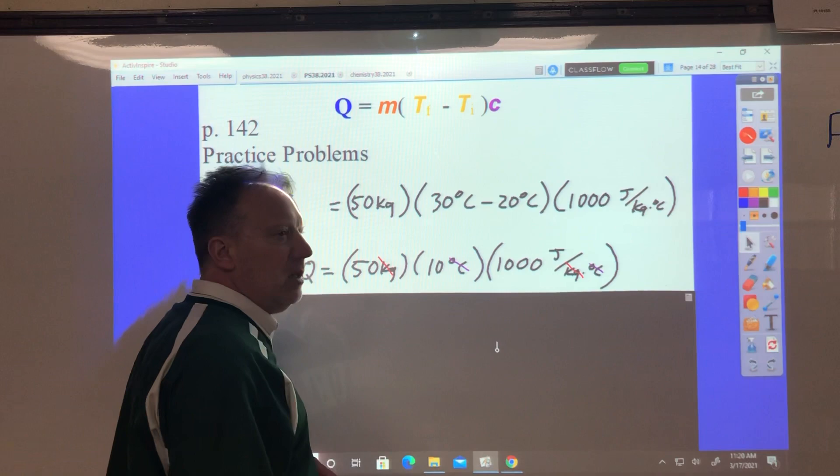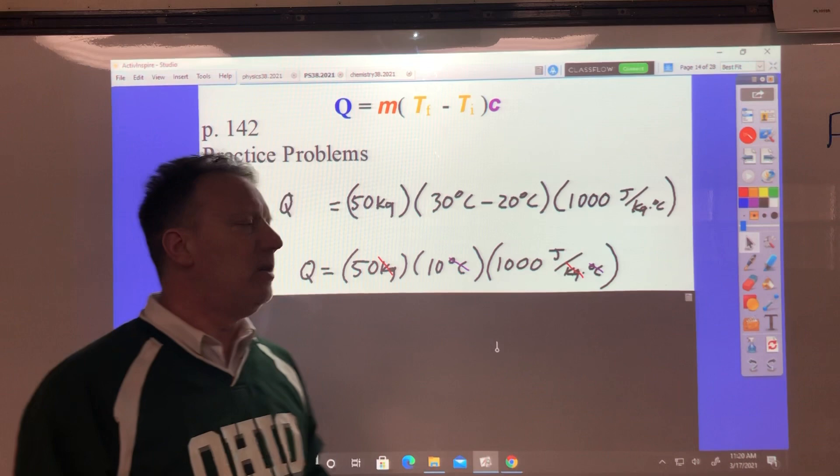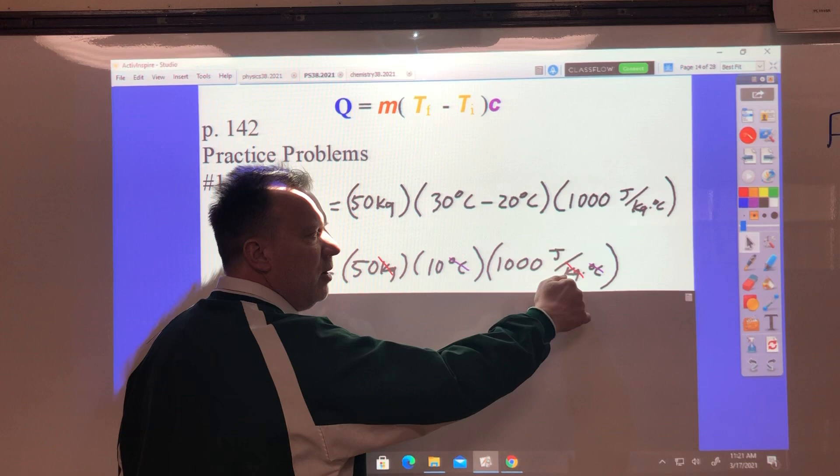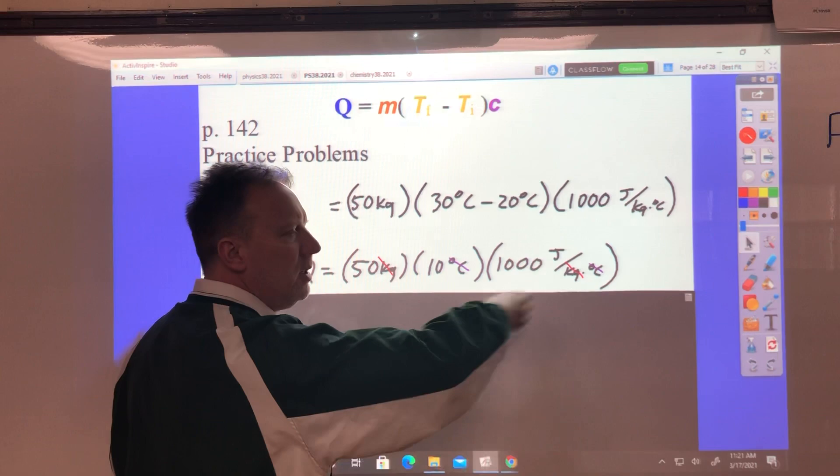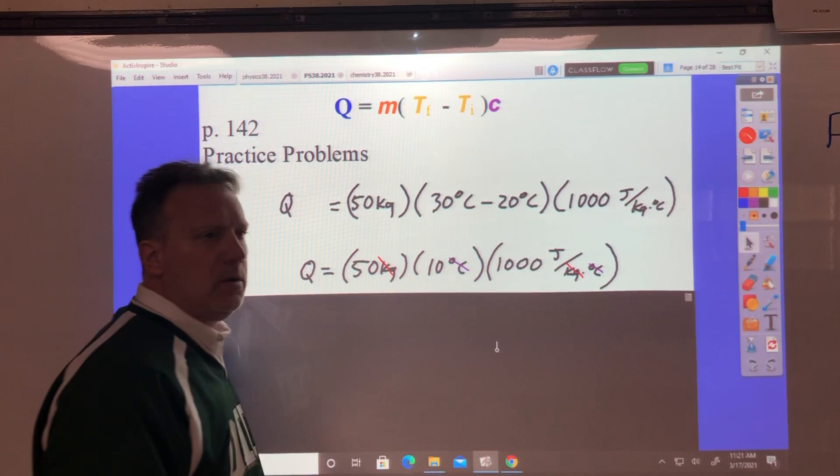Now you can multiply these things, but watch what happens to the units. The units will tell you if you're doing the problem right. We've got kilograms here in a numerator and then there in a denominator, that cancels. We've got a degree Celsius in the numerator here, a degree Celsius in the denominator there, that cancels.